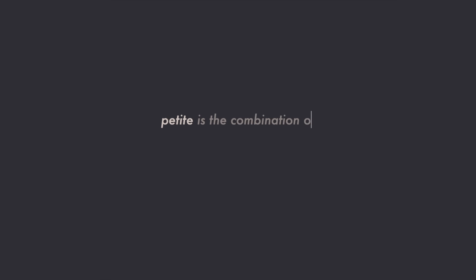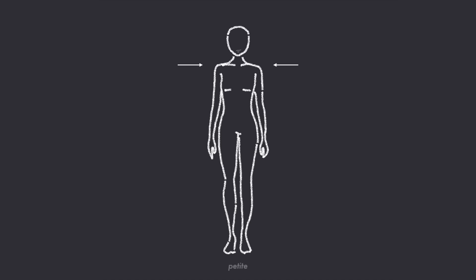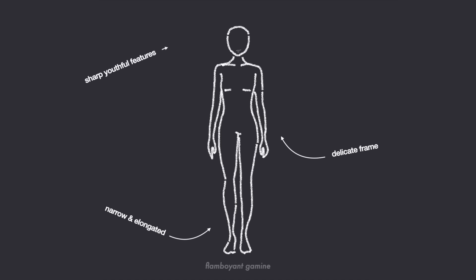Flamboyant Gamine: petite and vertical. If you have the flamboyant gamine body type, then your dominant features are petite and vertical. Petite is the combination of perceived narrowness and short stature in proportion to the overall bone structure and silhouette. A petite woman must inherently have a narrow bone structure with relatively thin bones — petite does not purely describe height, but also the narrowness and overall delicate nature of the bone structure. This is why the flamboyant gamine woman can have both petite and vertical: her narrowness creates a long vertical line, even though she may not be very tall. She has a small and elongated figure, small and sharp facial features, and typically large, rounded eyes.